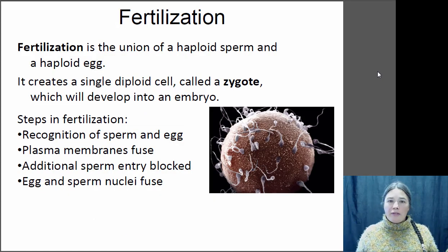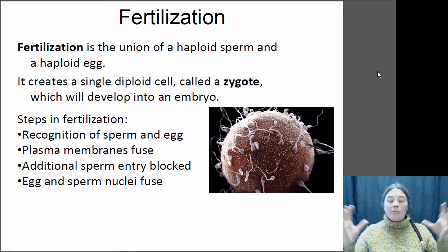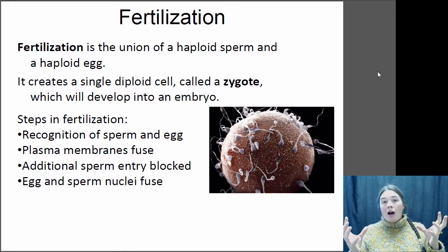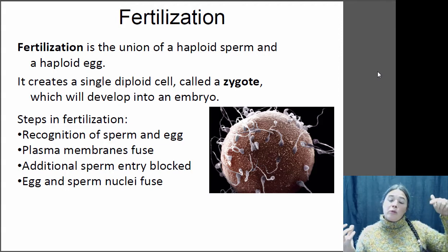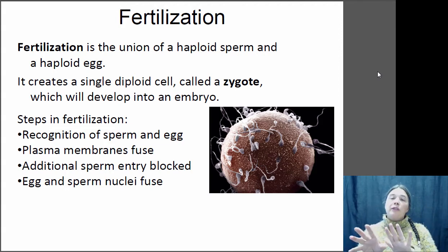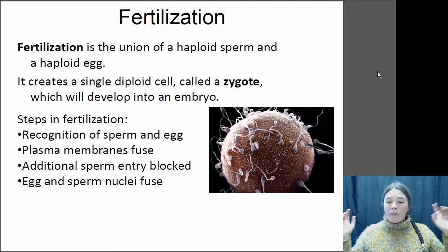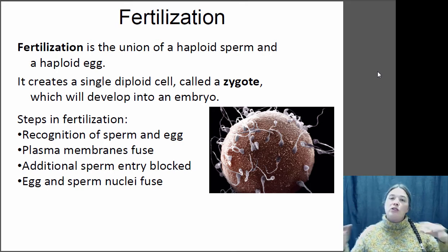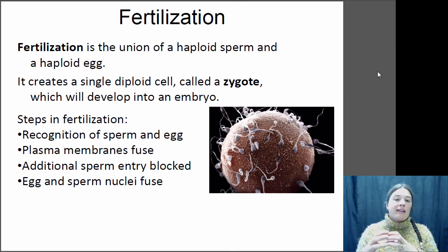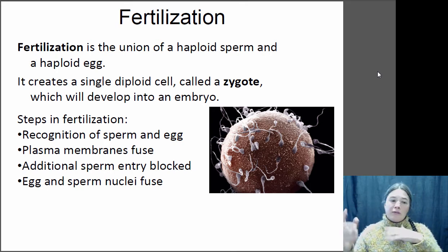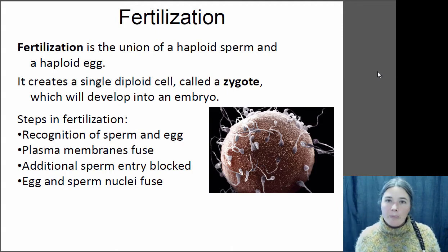You've got sperm, you've got eggs — you've got to have fertilization. When a sperm and an egg combine, the sperm penetrates the wall of the egg and delivers its nucleus. The two nuclei fuse, and you go from a haploid sperm and a haploid egg to a diploid cell — that's the zygote. Then the zygote divides and starts to form the embryo.